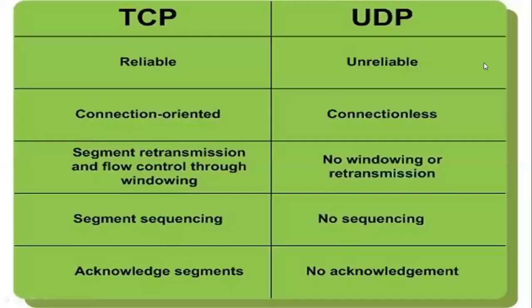For example, web browsing is an example of TCP, whereas a real-time example of UDP is a phone call. Other examples: HTTP and FTP are reliable, connection-oriented TCP services, whereas real-time traffic such as voice calls are UDP.